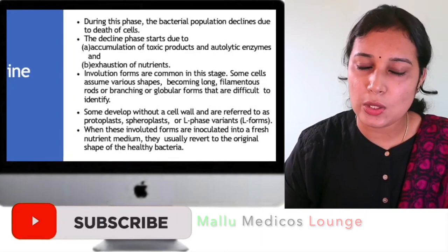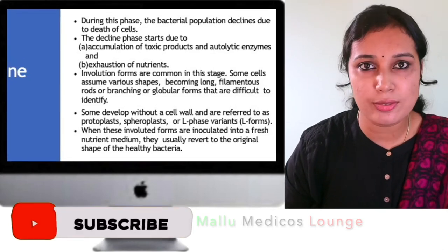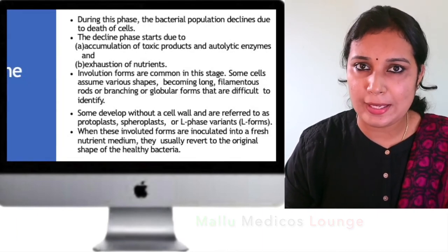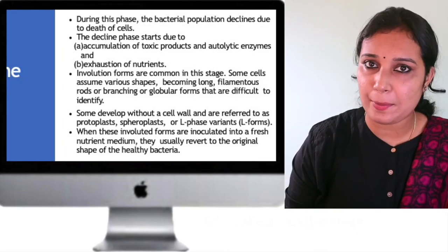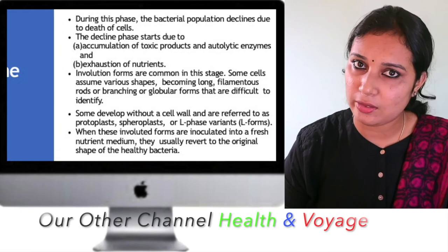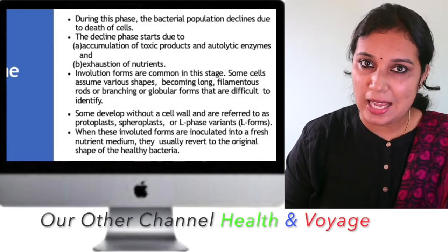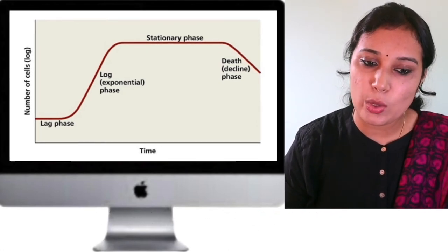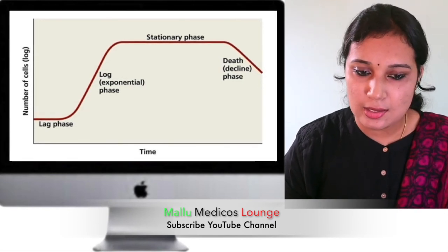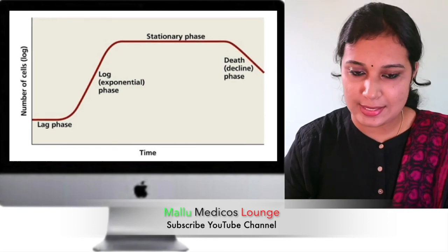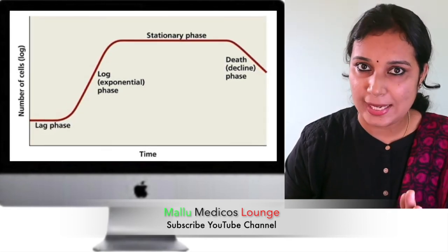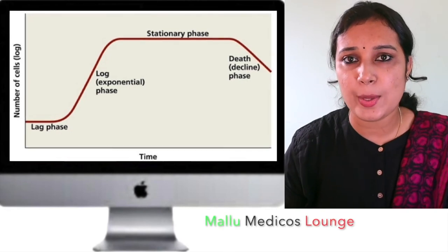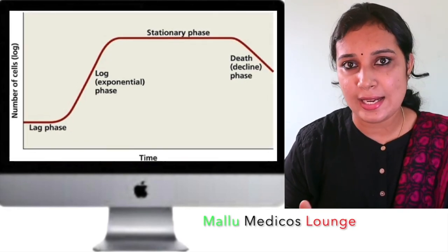When we do staining in this phase, identification is difficult. If bacteria from the decline phase are transferred to fresh media, the involution forms can convert back to normal bacteria. On the graph, the x-axis is time and the y-axis is the logarithm of the number of viable cells. The lag phase appears as an initial flat line, the log phase as a steeply sloped straight line, the stationary phase as a flat horizontal line, and the decline phase as a descending line representing decreasing viable cells.